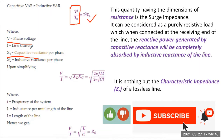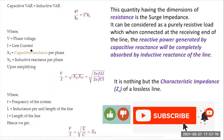XL is the inductive reactance, equal to L·ω, where L is the inductance and ω is the angular frequency. And Xc is equal to 1/(C·ω). So the reactive power supplied by the capacitor is V²/Xc and the reactive power absorbed by the inductor is I²·XL. These are the basic expressions.